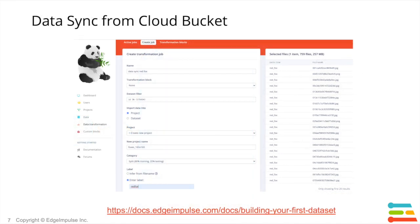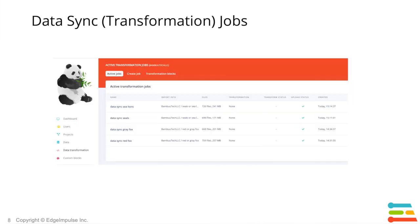We can then use what is known as transformation jobs to perform a data sync operation. The data sync operation takes the appropriate image dataset from the data bucket and feeds it into the relevant project. This process is what makes it easy and efficient to source data from the organization's central storage.